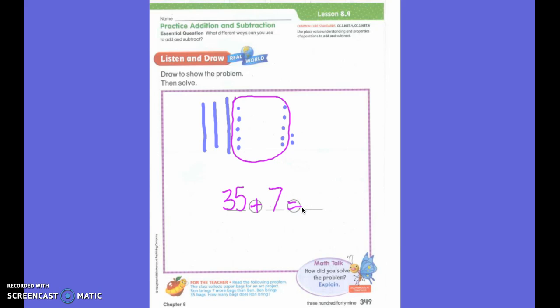Good job. Very important. So we drew our picture. We wrote our number sentence. Now what do we have to do? Write the answer. Let's count our picture.